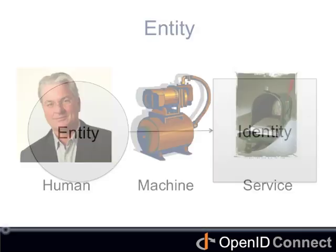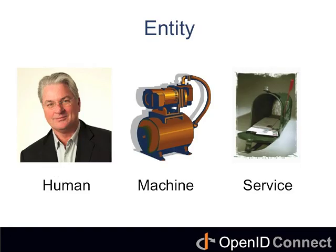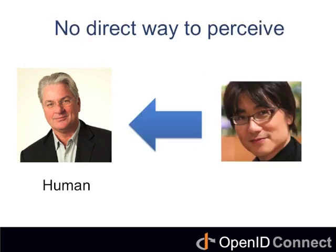An entity is like us — a human being, a machine, a service, or whatever. But we don't perceive entities directly, but indirectly through various attributes about the entity.